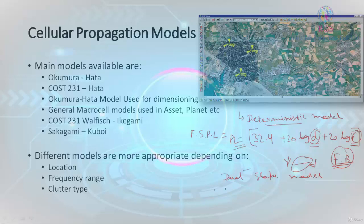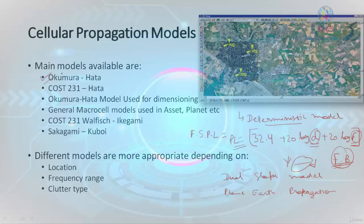We also have the plane earth propagation model. In fact, the Okumura-Hata model is also a deterministic model — meaning you have a fixed formula. The difference between a deterministic model and others is that you have a defined formula you can directly apply.